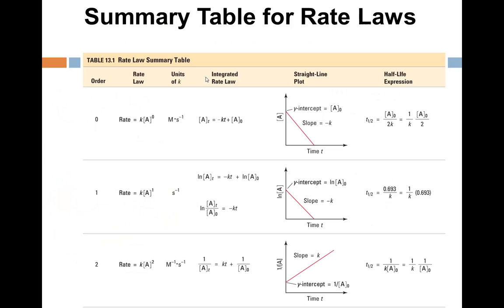So as a summary, here are all the orders we're going to be discussing. For zero order, if you do concentration versus time, that'll give you a straight line. The negative k is the slope. If it's first order, you do ln of A versus time, and that'll give you a straight line. Once again, negative k. And finally, the second order is 1 over A versus time, and that will give you a slope of k.